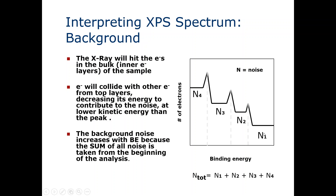The background noise, which you can see plotted here in this spectrum, is represented by N. We have several noise peaks, and the background noise increases with binding energy, as you can observe here. With increase in binding energy, the noise is also increasing. The sum of all the noise is taken from the beginning of the analysis, and you can see here the total noise at each stage.